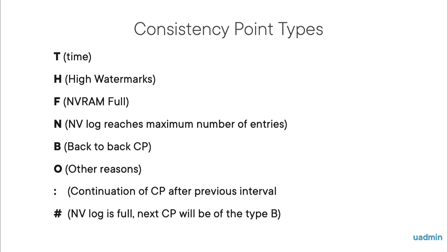And as stated earlier, there are multiple triggers that can cause a consistency point. We already saw that every 10 seconds, there is a consistency point based on time. And if a threshold of new blocks in memory is breached, the so-called high watermark causes a consistency point. And when NVRAM is half full, or in the case of an HA pair is full for one fourth. The NVlog holds the number of changes to the file system, and this can also cause a CP.